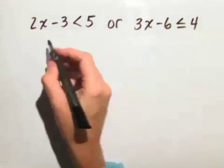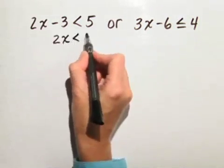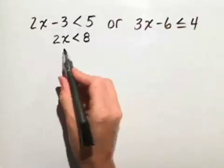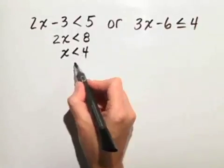So first, let's solve our first inequality by adding 3 to both sides. We have 2x is less than 8. We divide both sides by 2, and we have x is less than 4.